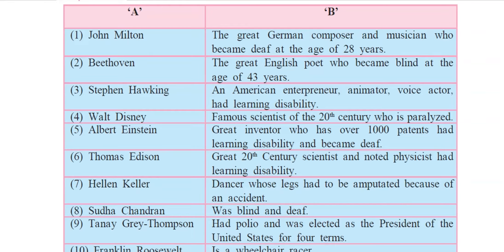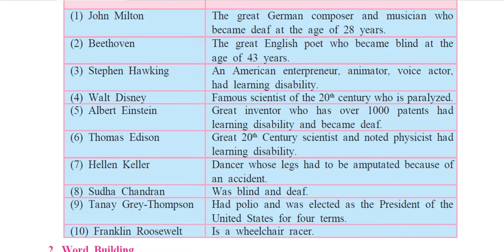The names in column A are: first, John Milton; second, Beethoven; third, Stephen Hawking; fourth, Walt Disney; fifth, Albert Einstein; sixth, Thomas Edison; seventh, Helen Keller; eighth, Sudha Chandran; ninth, Tanae Gray Thompson; and tenth, Franklin Roosevelt. The corresponding information is given in column B.